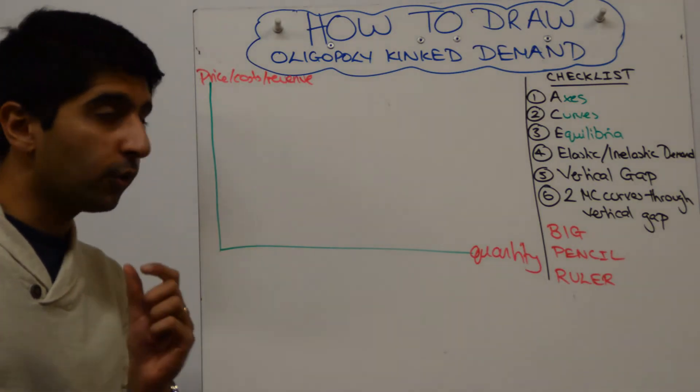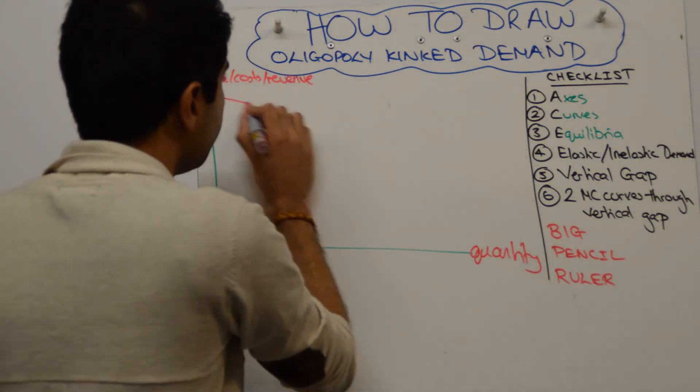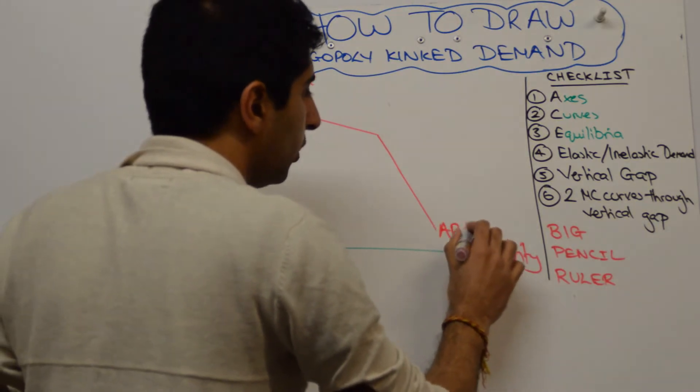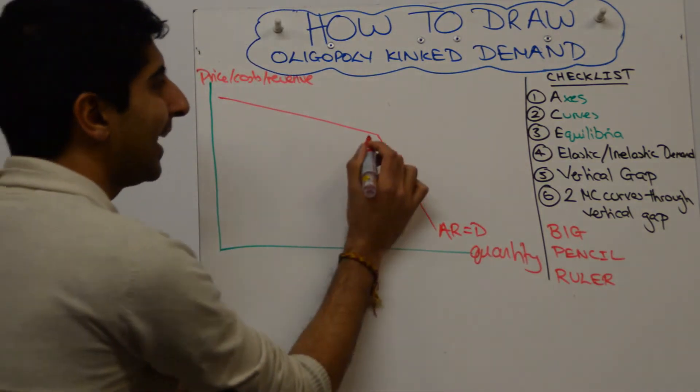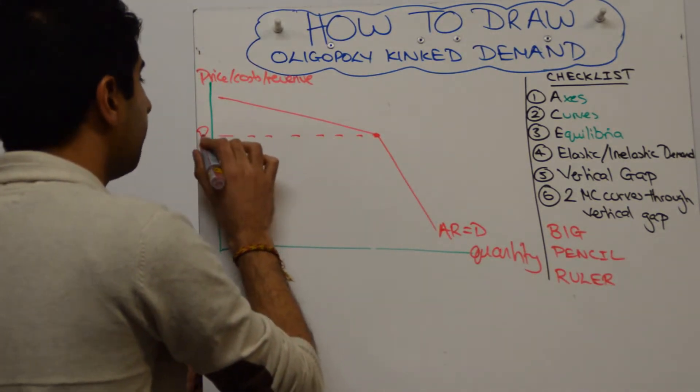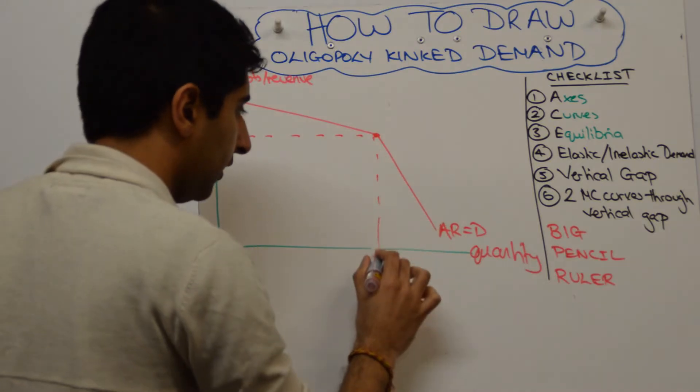Next thing to do is to draw your kinked demand curve. So an elastic portion and then an inelastic portion. And the label here is average revenue which is equal to demand. At the kink we get our price and our quantity. So let's call that P1 and the quantity of Q1.